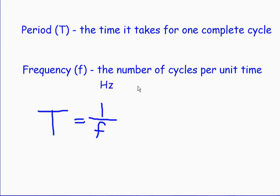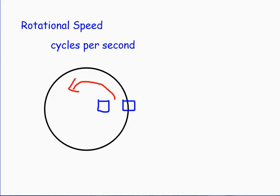Rotational speed is the number of cycles per second, or how many times an object rotates in a given amount of time. Rotational speed and tangential speed are both used to describe the velocity of an object moving in a circular path. Rotational speed is going to be the same for any point within a disk that's moving, because the entire disk is rotating together, so all points are going to be rotating at the same rotational speed.